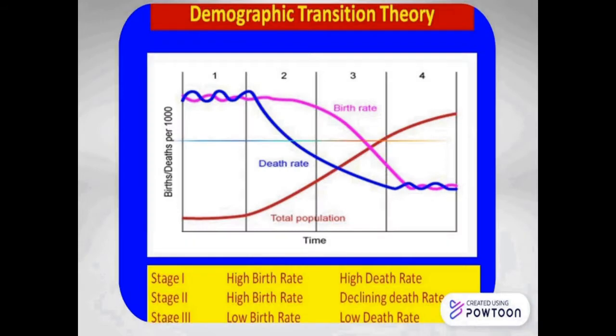Now we will move on to the theory of demographic transition. What is the demographic transition, or what does it postulate? The theory of demographic transition explains the various stages of population growth. According to this theory, every country passes through three stages of demographic transition. These stages are empirically verifiable, and the theory also postulates the various stage sequences of birth and death rates.